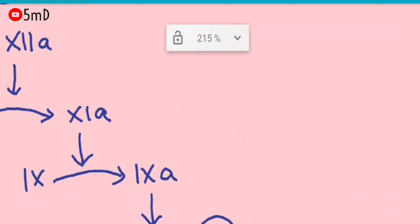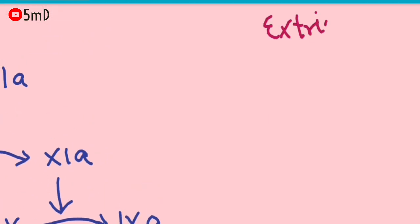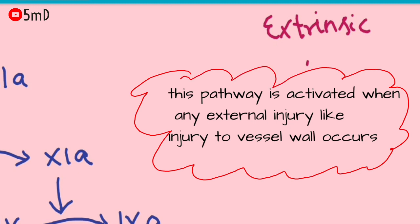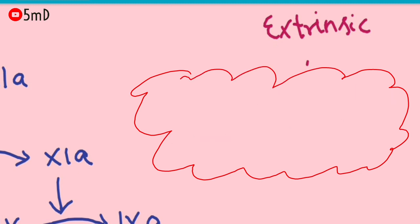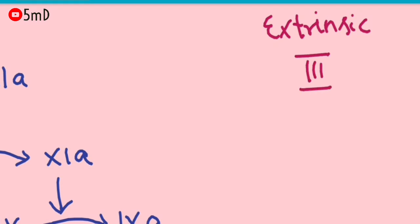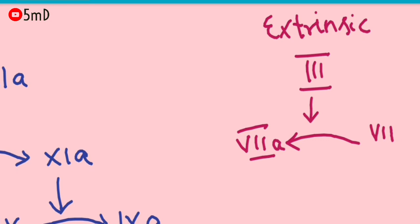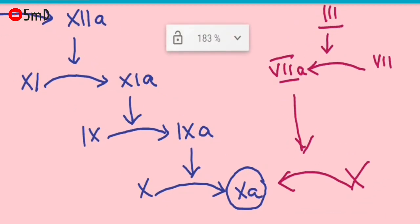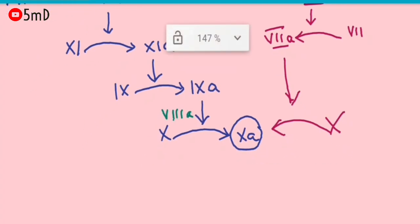Factor 10 is a common factor. In the extrinsic pathway, when an external injury occurs to the blood vessel, Factor 3 — tissue thromboplastin — is activated. When released, it activates Factor 7, and activated Factor 7 again activates Factor 10. Activated Factor 8 also helps in the activation of Factor 10, and calcium ions and platelet phospholipids further help in the activation of Factor 10.